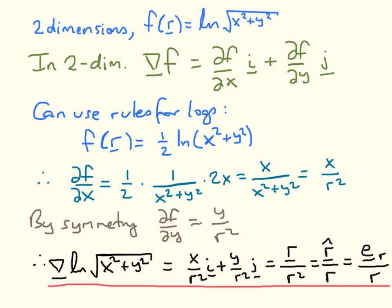Taking these two results and putting them into the definition of the gradient in two dimensions, we obtain X over R squared times the I unit vector plus Y over R squared times the J unit vector. There is a common factor of R squared, and XI plus YJ is the vector R, so the gradient is R over R squared. Dividing one factor of R gives the unit vector R-hat over R, equivalently E sub R over R. In terms of dimensional analysis, the scalar field is dimensionless, so differentiating once gives dimension 1 over length — exactly what we see here.